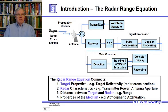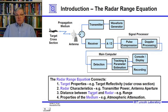That radar equation connects the target properties — the target's reflectivity, or its radar cross-section as we call it — the radar characteristics, such as transmitter power and antenna aperture, the distance between the target and the radar — the range to the target — and also the properties of the medium, such as atmospheric attenuation.